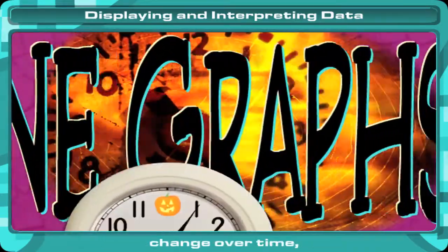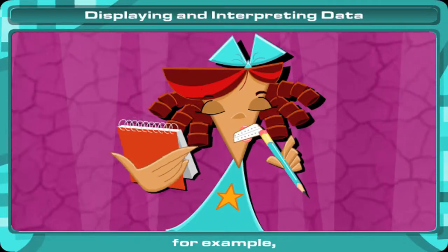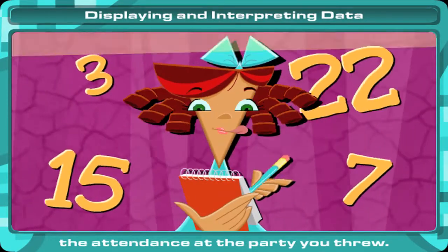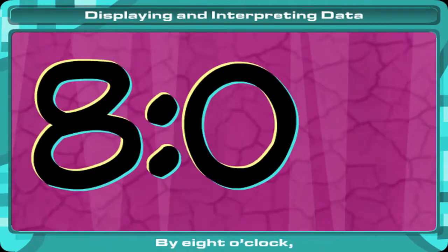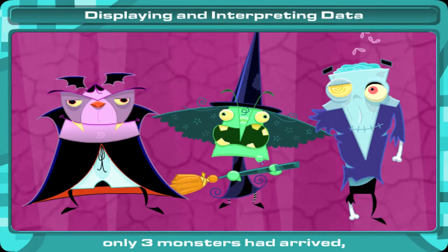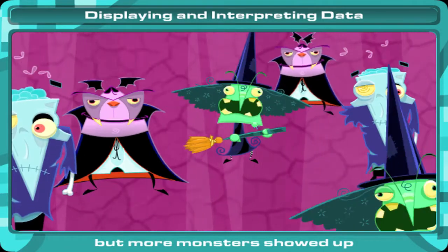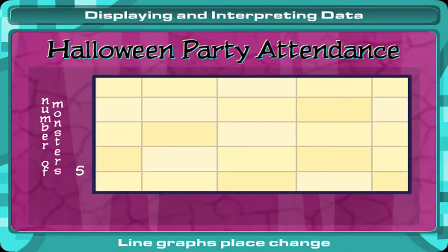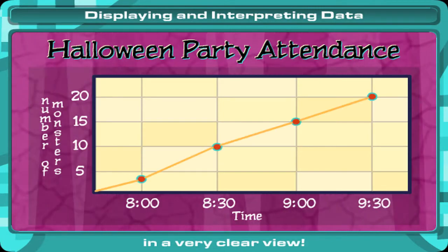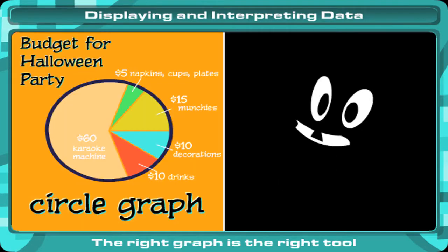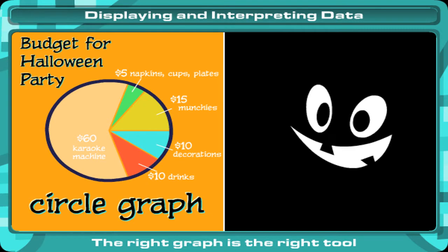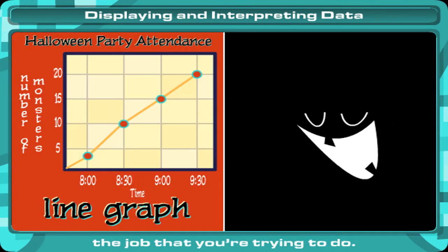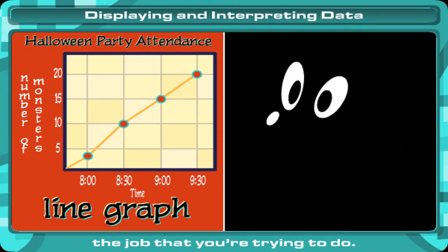Line graphs are good for showing change over time. For example, the attendance at the party it threw — by eight o'clock only three monsters had arrived, but more monsters showed up before the party was through. Line graphs display change in a very clear view. The right graph is the right tool for the job that you're trying to do.